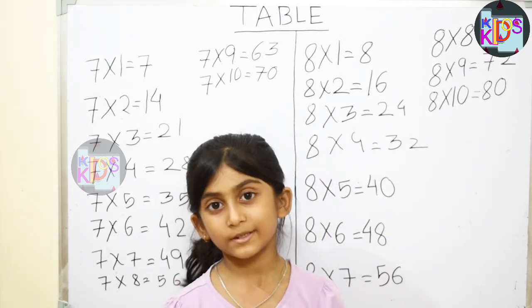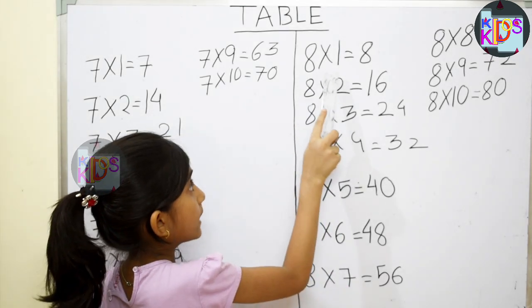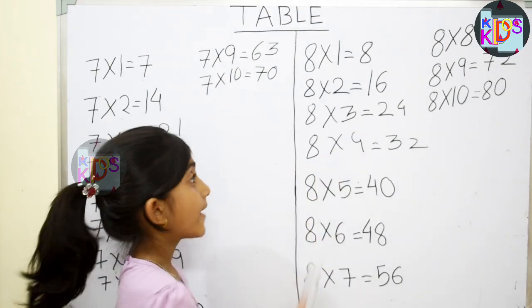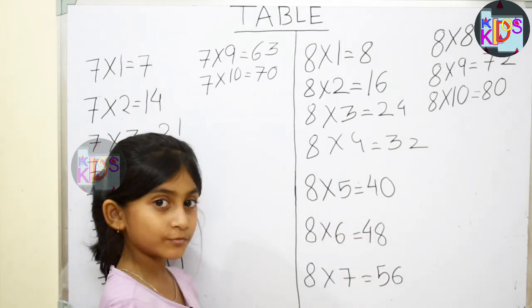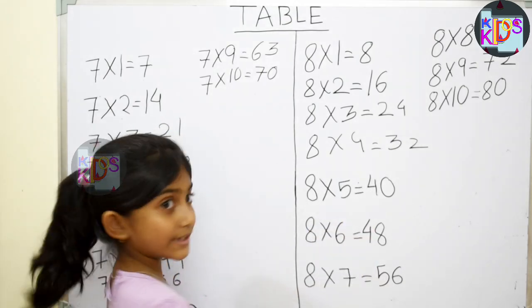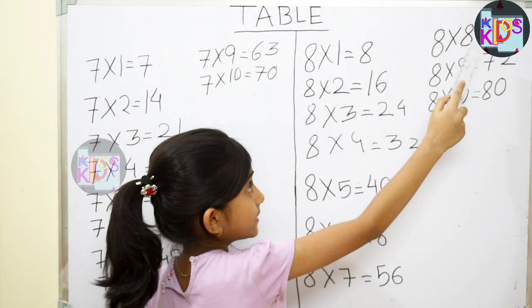Let's start with me. 8 times 1 is 8, 8 times 2 is 16, 8 times 3 is 24, 8 times 4 is 32, 8 times 5 is 40, 8 times 6 is 48, 8 times 7 is 56, 8 times 8 is 64.